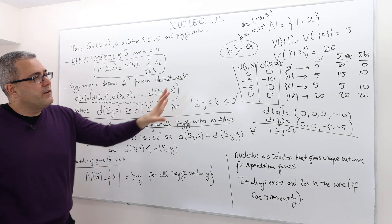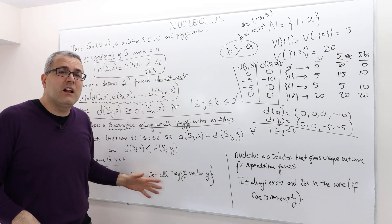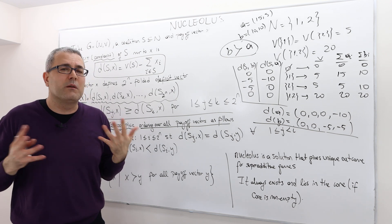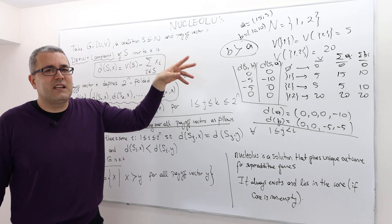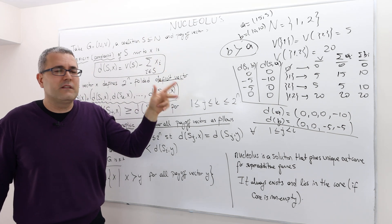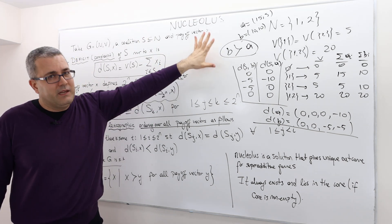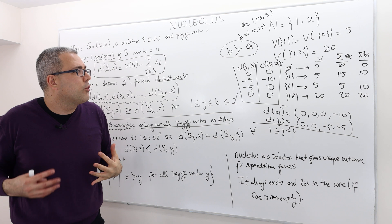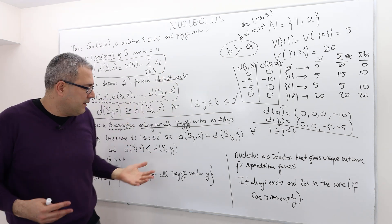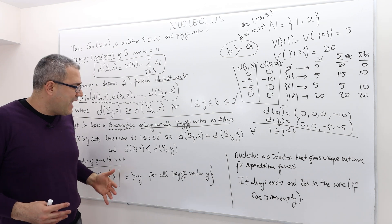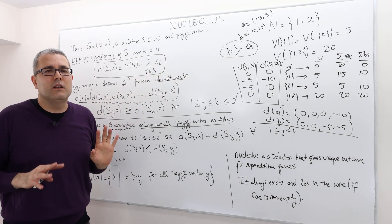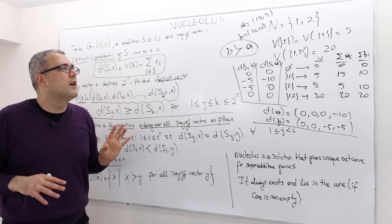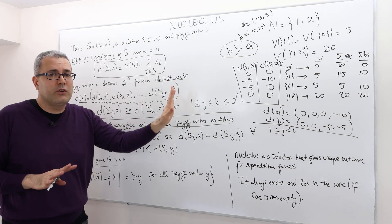So if a payoff vector is in the nucleus, then there is no other payoff vector which is going to be better than x in the lexicographic sense. Obviously, one problem. Calculating the nucleus is a very complicated business, especially if the number of players is huge. In this example, I think we can calculate it. Here, I did not calculate. I just picked two random payoff vectors, a and b. What I just show you is that b is better than a.